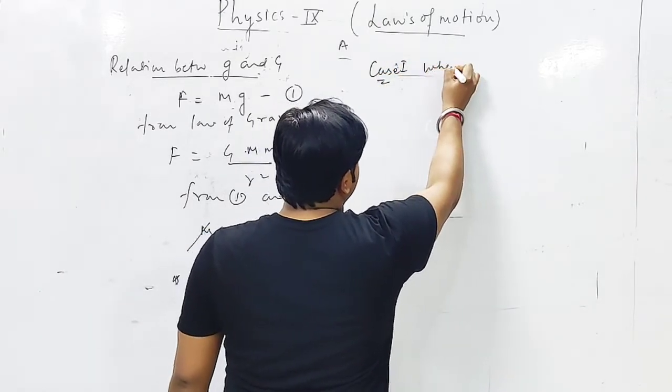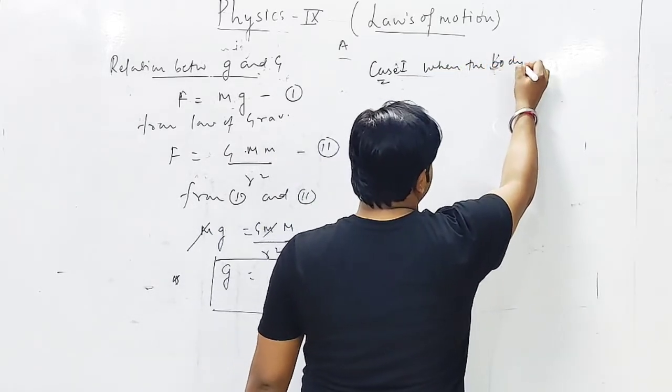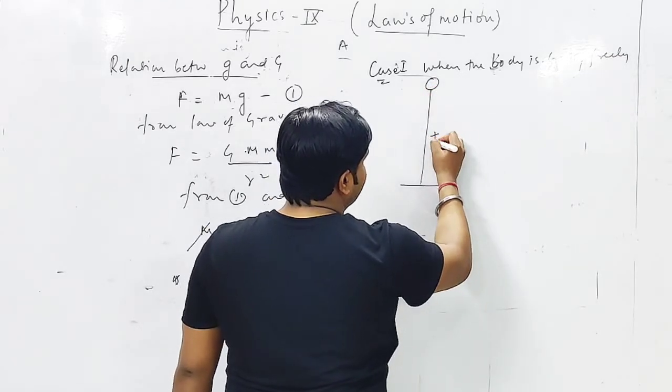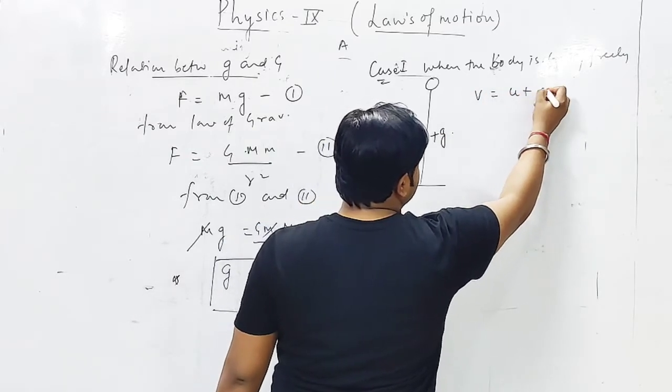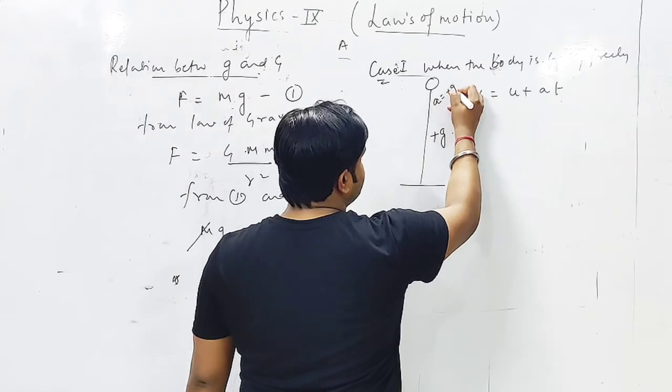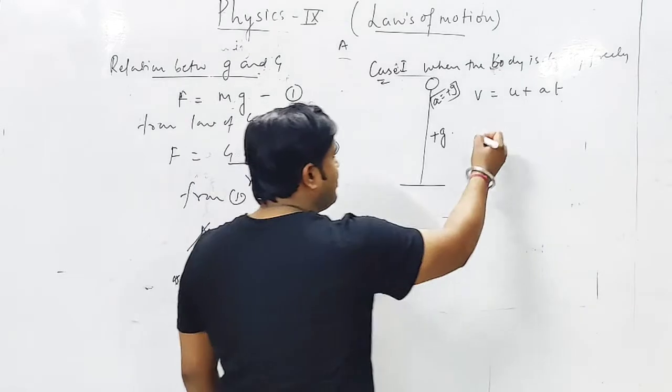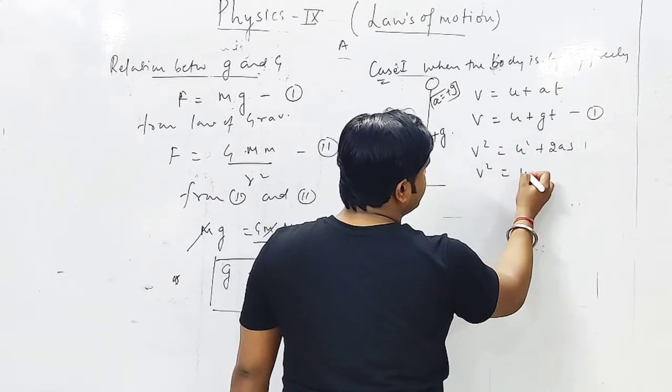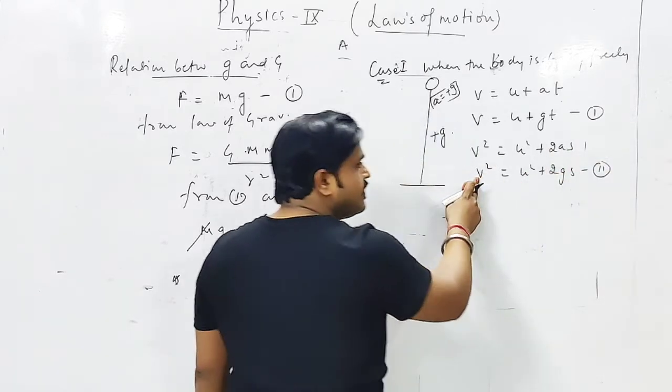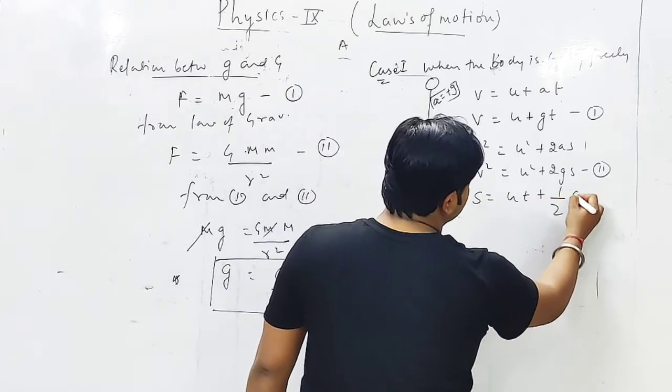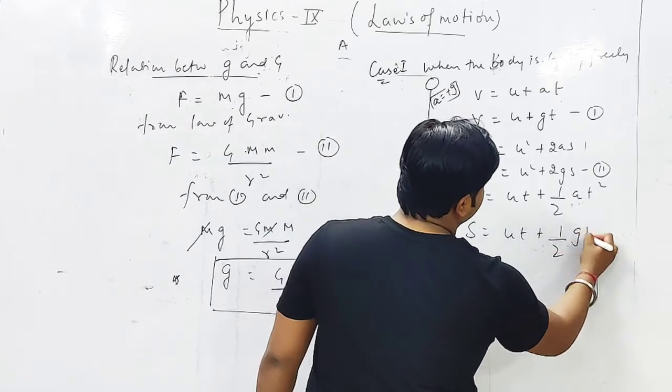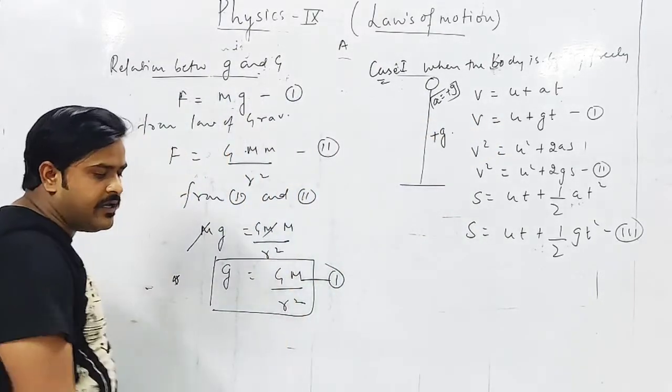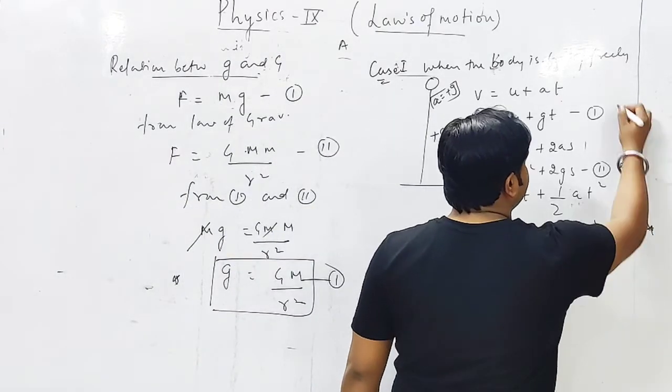First case is when the body is falling freely. When the body is falling freely due to acceleration due to gravity, the equation will be v equals u plus gt. First equation. Then v square equal to u square plus 2gs. And s equals ut plus half gt square. What I have done, I have replaced this a by plus g, since the body is falling freely under gravity.